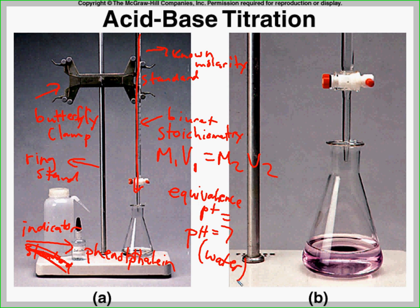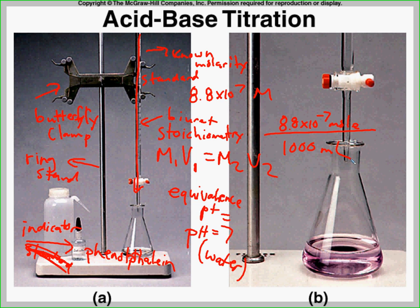Typically everything you do in titration is in milliliters — you'll never use massive liter-scale volumes. Anytime you're given a molarity, say 8.8 × 10⁻⁷ molar, you can write it as 8.8 × 10⁻⁷ moles per 1000 milliliters so you don't need any extra unit conversions. That's 1000 milliliters per 1 liter — just keep that in mind.